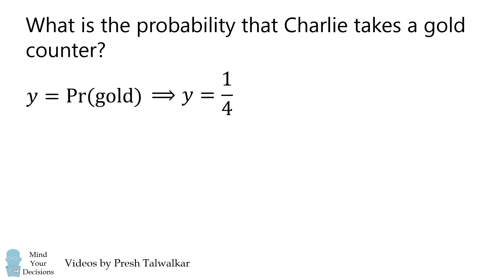And that's the answer. The probability that Charlie takes a gold counter is 1 fourth. So it's a pretty tricky problem, but it becomes more manageable when you break it down into steps.